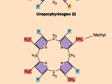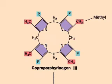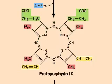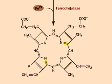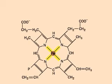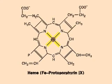Some of the side chains are modified to methyl and vinyl groups, and four hydrogens leave. Finally, the enzyme ferrochelatase adds a ferrous ion to complete the heme.